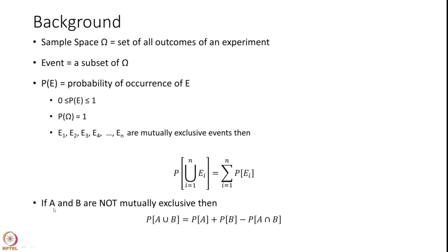It can also be derived that if A and B are not mutually exclusive events, then the probability of A union B is probability of A plus probability of B minus the probability of their intersection, because the common outcomes would have been counted twice, so we subtract once. This background you already have.